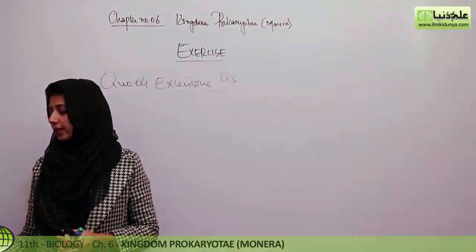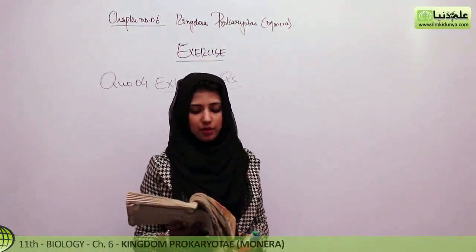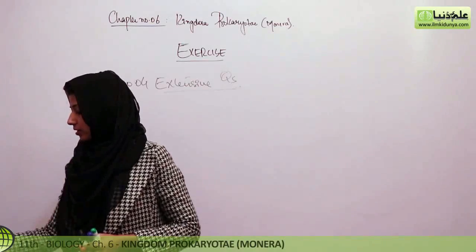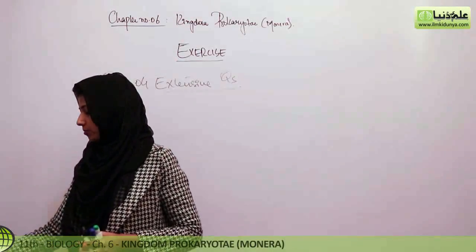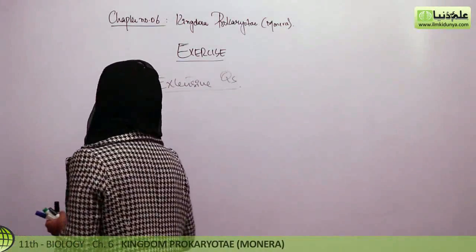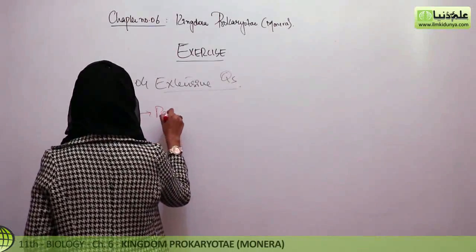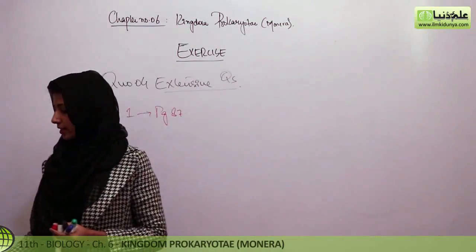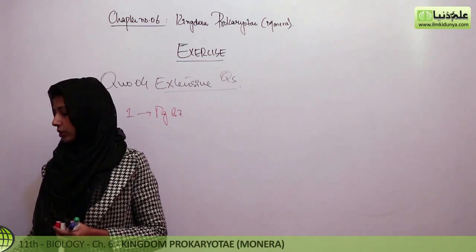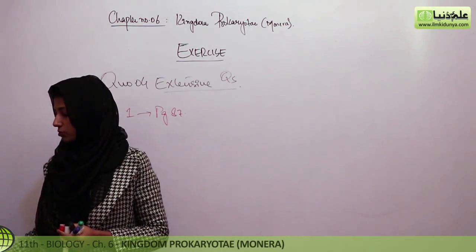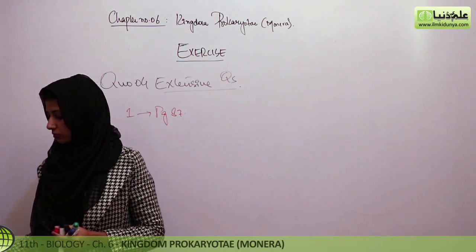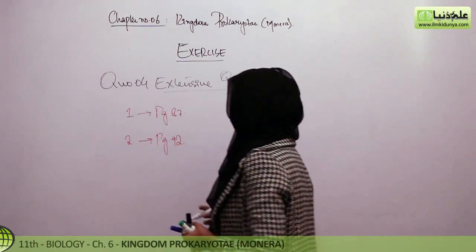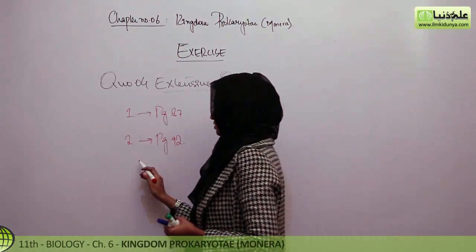Long question one: describe in detail the structure of the bacterial cell wall, emphasizing gram-positive and gram-negative properties. The bacterial cell wall structure — the difference between gram-positive and gram-negative — is given on page 87. Long question two: write an account of different methods used for controlling microbes. This is on page 92, and it can also be attempted using the flow sheet or points format covered in the lectures.